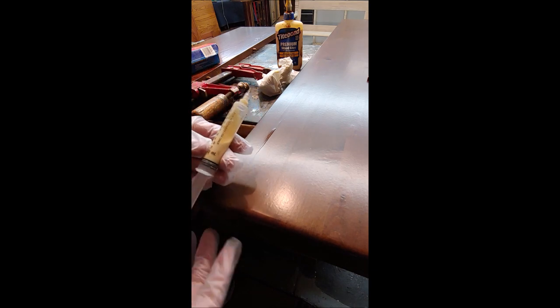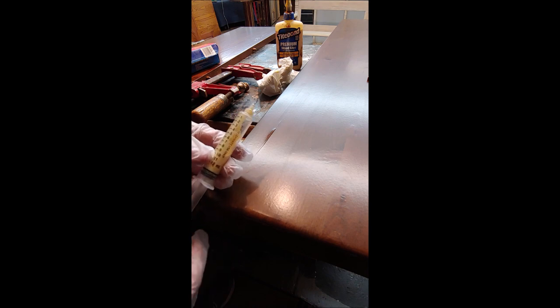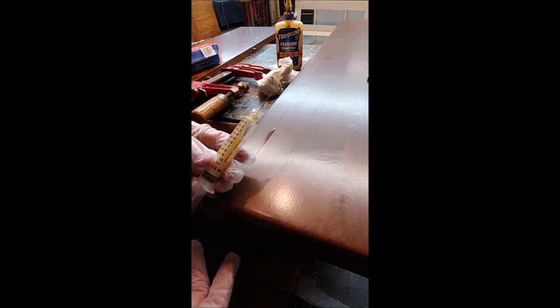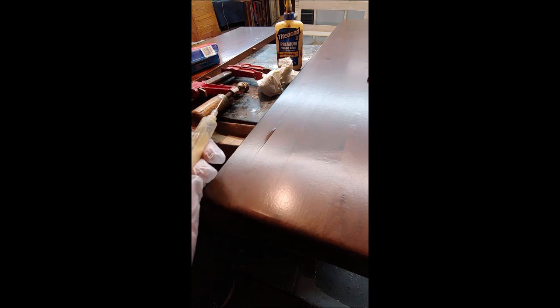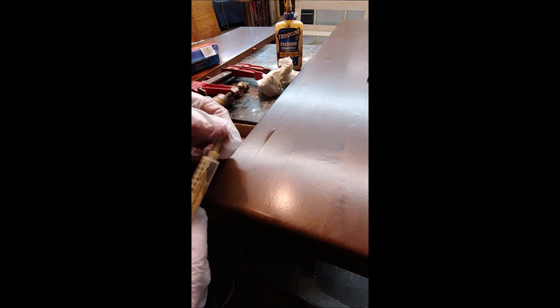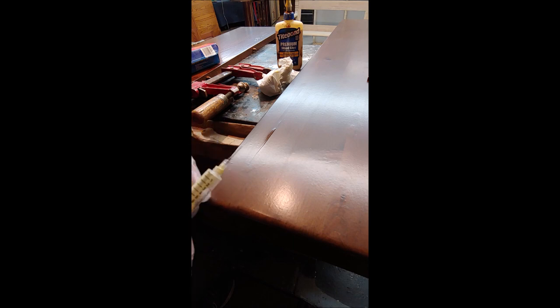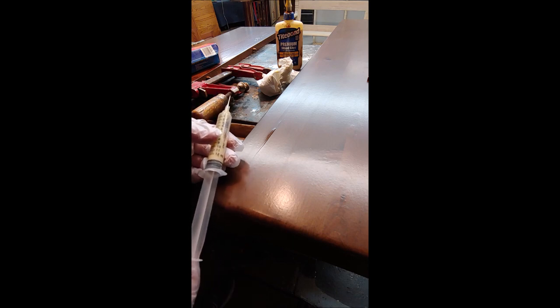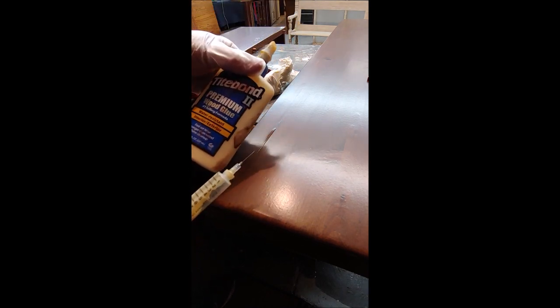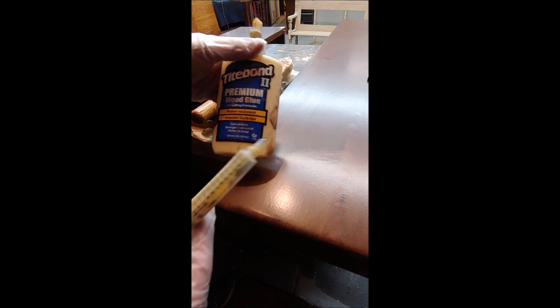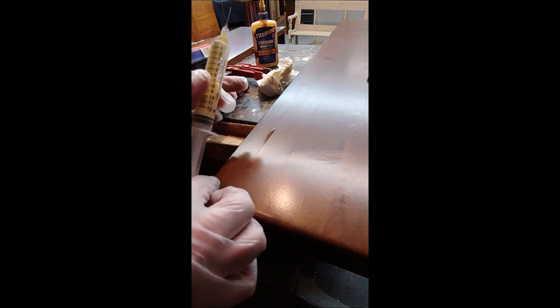So I use these veterinary needles. You can pick them up online at Amazon - I'll put the link down below - and another place is Tractor Supply if you happen to have a local one near you. Then I just use Titebond premium wood glue and fill the syringe up. You've got to get these in two pieces - the needle and then the tube.